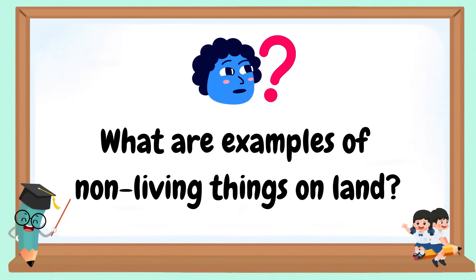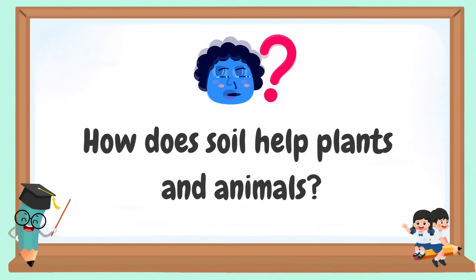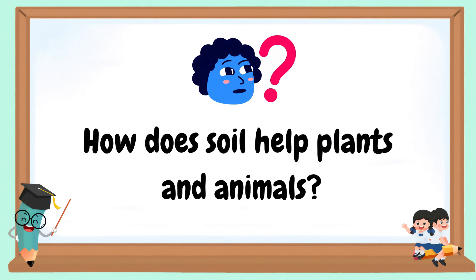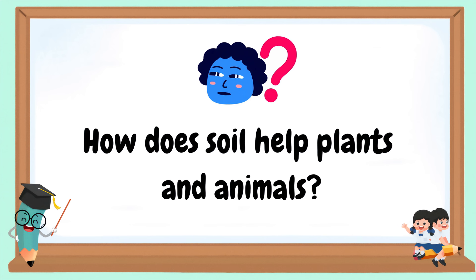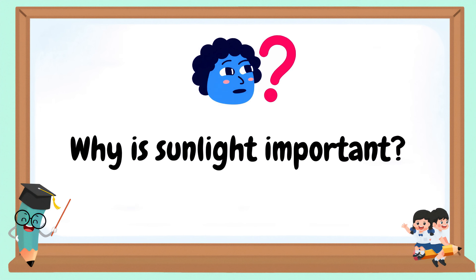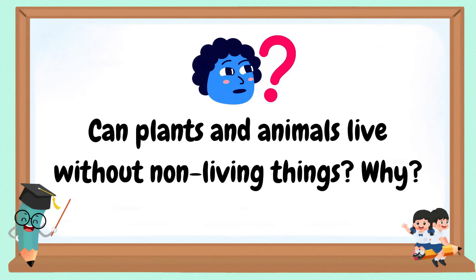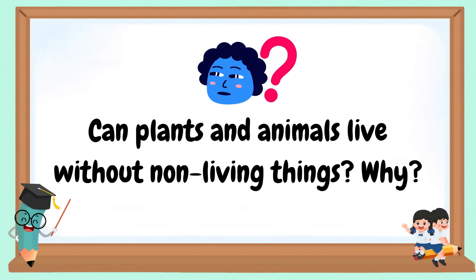What are examples of non-living things on land? How does soil help plants and animals? Why is sunlight important? Can plants and animals live without non-living things? Why?